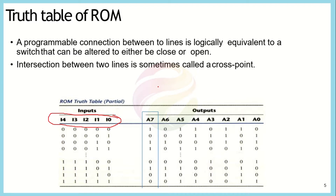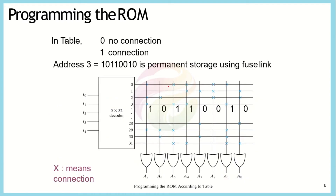We now need to specify which connections of the ROM are connected to the output and which are not. When programming the ROM — generally a one-time process — we mark the intersections using two different states: a fuse that is open means no connection, representing logic level zero, while a closed fuse represents logic level one. We represent logic level one using a cross symbol (X) at the intersection; the absence of this cross represents logic level zero.